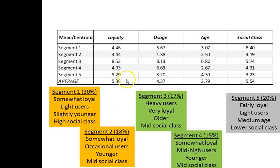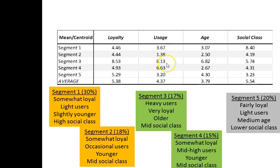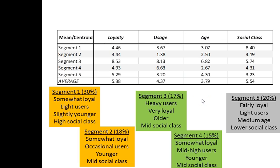For each segment we identify its size and what we know about consumers relative to the average. I've color-coded them — green means quite attractive. Segments 3 and 4 together represent 32% of the market, about a third. I'm most interested in usage: segments 3 and 4 are the high users, so even though it's only 32% of consumers, in terms of volume it will be much higher because these people are buying a lot of the product. You might designate them as your target market.